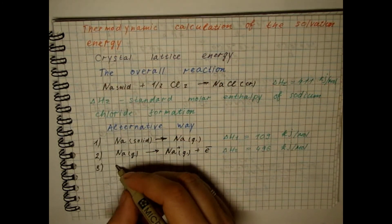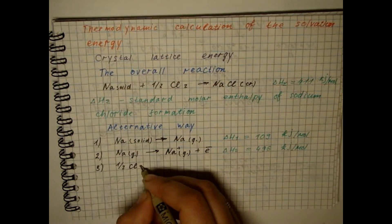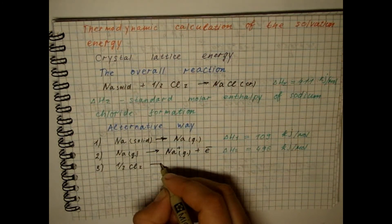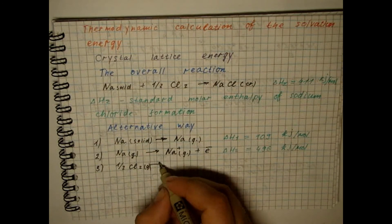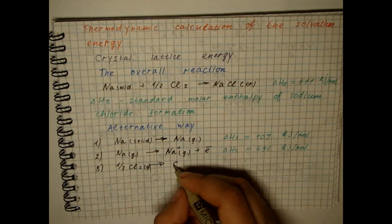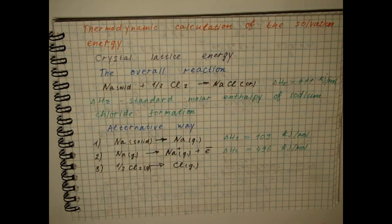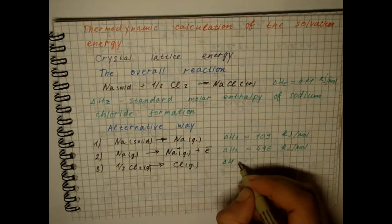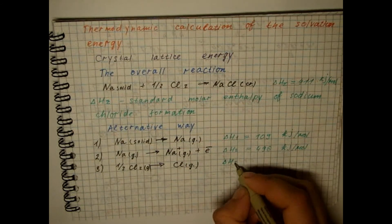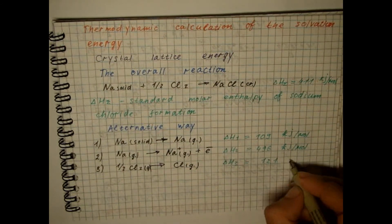The third stage is the atomization of chlorine. The chlorine atomization enthalpy is equal to half of the dissociation energy of the chlorine-chlorine bond.